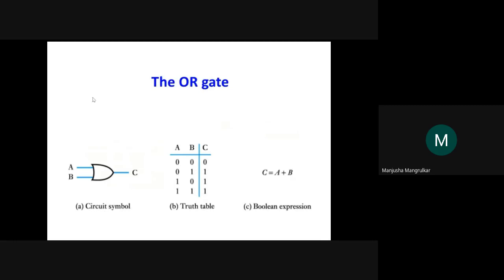The symbolic representation of OR gate has 2 inputs and C as output. The truth table has 4 conditions for 2 inputs. If no input is 1 — all inputs are 0 — output is 0. If one input is 1, output is 1. Both inputs 1, output is 1. The Boolean expression is C equals A OR B.